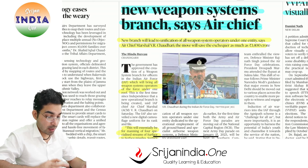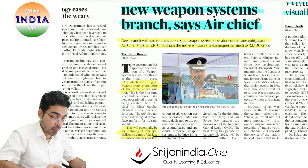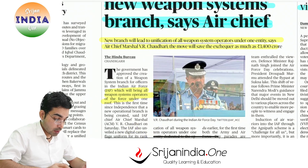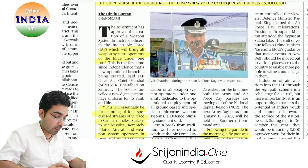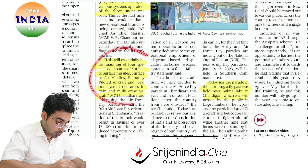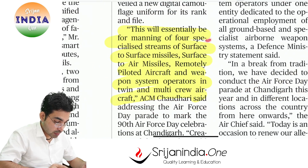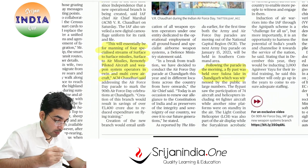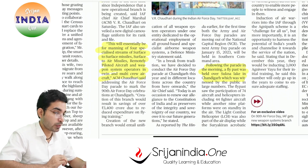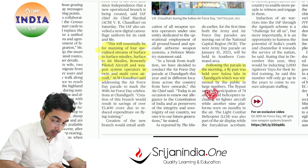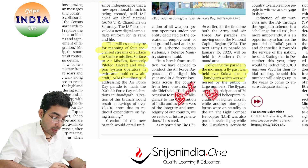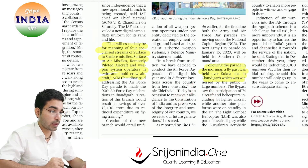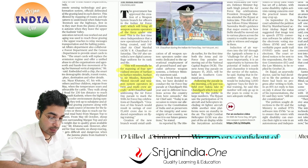The new branch will lead to unification of all weapon systems — including specialized streams for surface-to-surface, surface-to-air, remote piloted aircraft like drones, weapon system operators, and twin and multi-crew aircraft. The idea is to unify to reduce miscommunication, errors, and accidents such as friendly-fire incidents caused by human error. Such incidents are not acceptable.